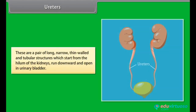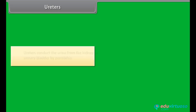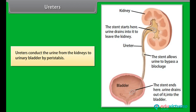Ureters are a pair of long, narrow, thin-walled tubular structures which start from the hilum of the kidneys, run downward, and open into the urinary bladder. Ureters conduct the urine from the kidneys to the urinary bladder by peristalsis.